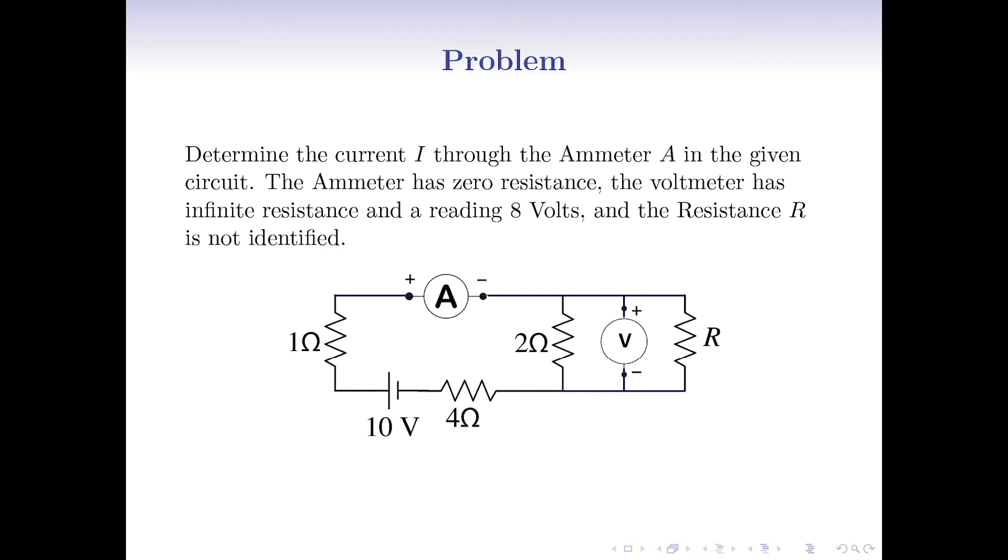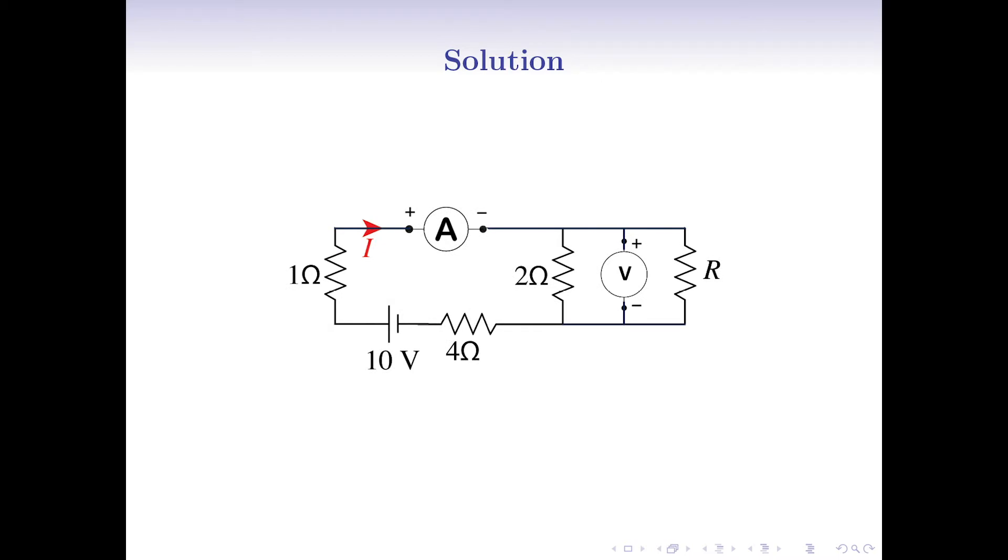Well, basically, we need to calculate what number the ammeter shows. This current labeled by I in the picture.